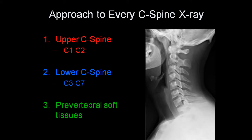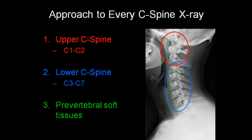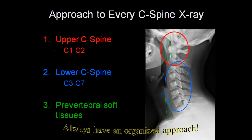In terms of an approach to every cervical spine x-ray, the upper cervical spine (C1-C2 region) should be looked at separately. Next, the lower C-spine (C3 to C7) should be looked at separately. And finally, you should pay special attention to the prevertebral soft tissues. Remember to always have an organized approach to every cervical spine x-ray.